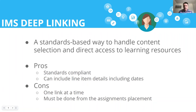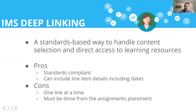The next option we looked at was IMS deep linking. Think of it as a way to select a set of content — you would launch over to a tool, be presented with a list of potential links, select those, and they'd be sent back into the LMS. The deep linking response information allows you to include line item details with dates, so it would have been a great option. However, with the number of assignments needed in a particular course — potentially hundreds — the downside was that this has to be done one at a time. An instructor would have to go in, select one assignment, push it back to the LMS, and repeat multiple times. With that, it became a non-starter simply because of the heavy lifting the instructor would potentially have to do.